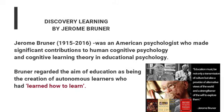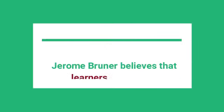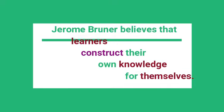Jerome Bruner was an American psychologist who made significant contributions to human cognitive psychology and cognitive learning theory in educational psychology. Bruner regarded the aim of education as being the creation of autonomous learners who had learned how to learn. Being a constructivist, Jerome Bruner believes that learners construct their own knowledge for themselves.